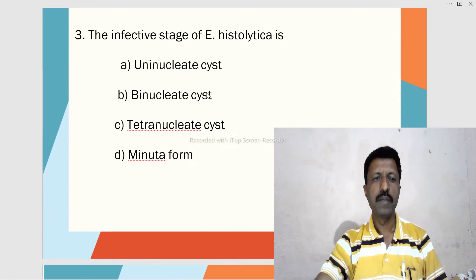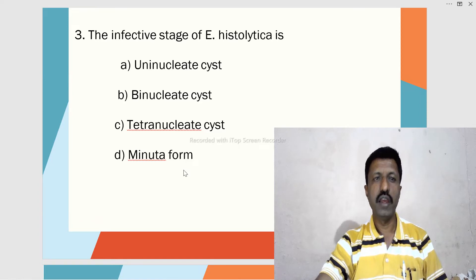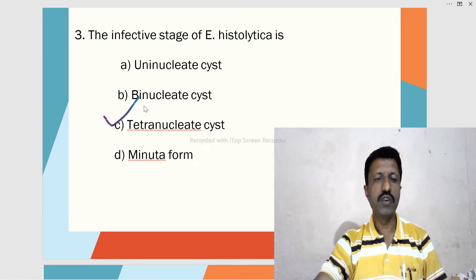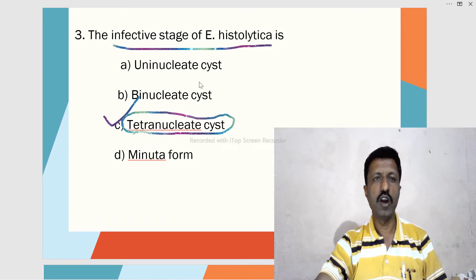Third MCQ: The infective stage of Entamoeba is — A. Uninucleate cyst, B. Binucleate cyst, C. Tetranucleate cyst, D. Minuta form. The tetranucleate cyst — the cyst having four nuclei — is the infective stage of Entamoeba histolytica.